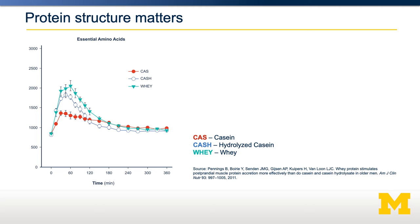Casein hydrolysate, shown here as CASH, is a protein that is now partially broken down — it is casein that is partially digested. By partially digesting it and breaking down some of that tertiary and secondary structure, casein hydrolysate is digested and absorbed much more similarly to whey than to native casein. Again, the protein structure matters for digestion and absorption.